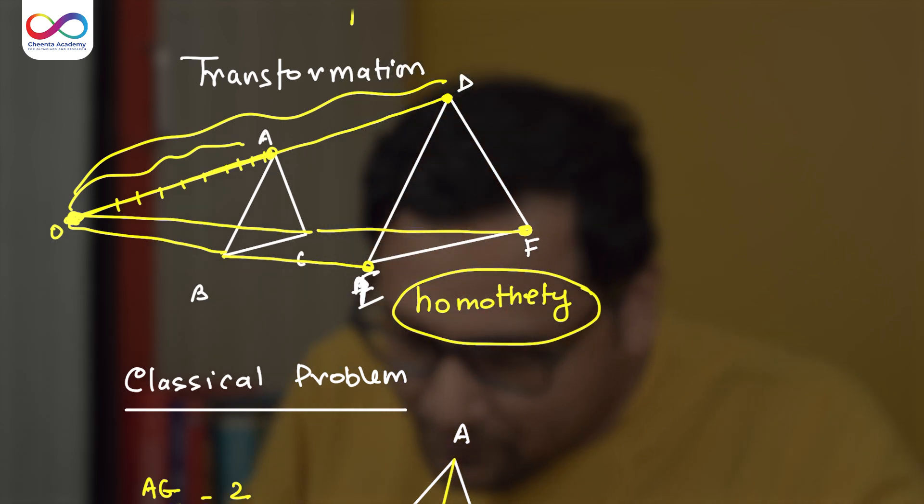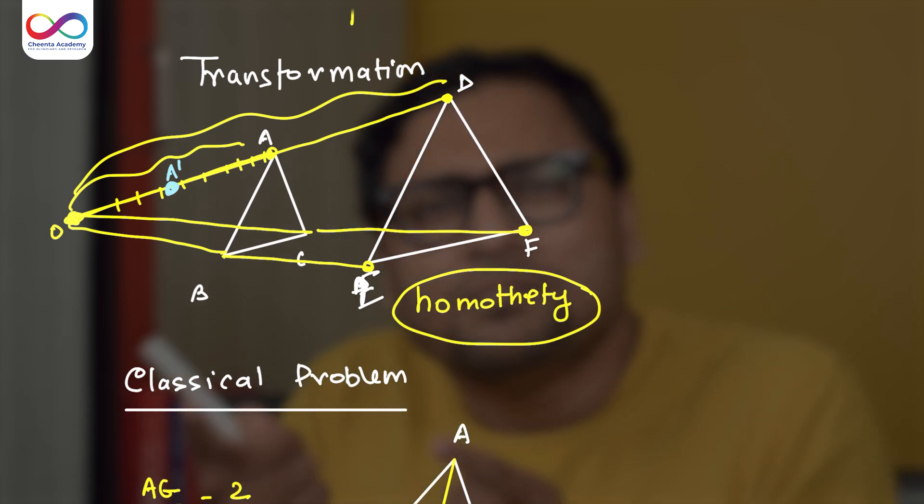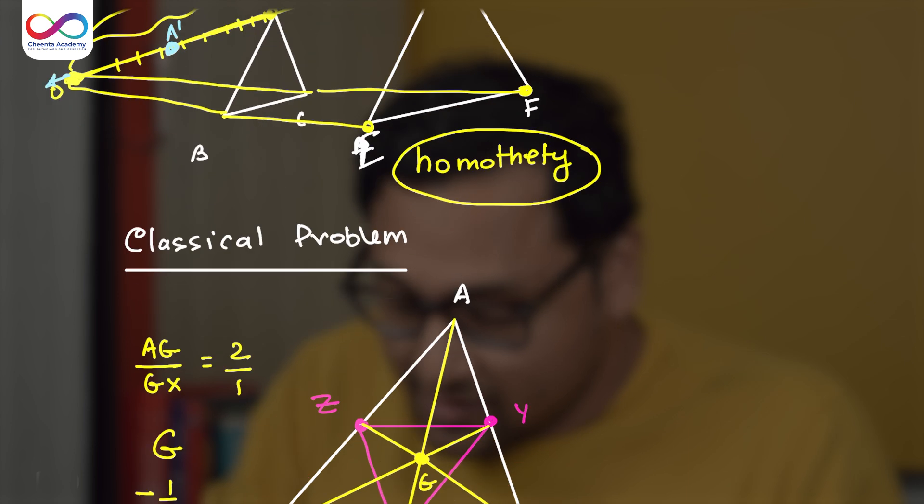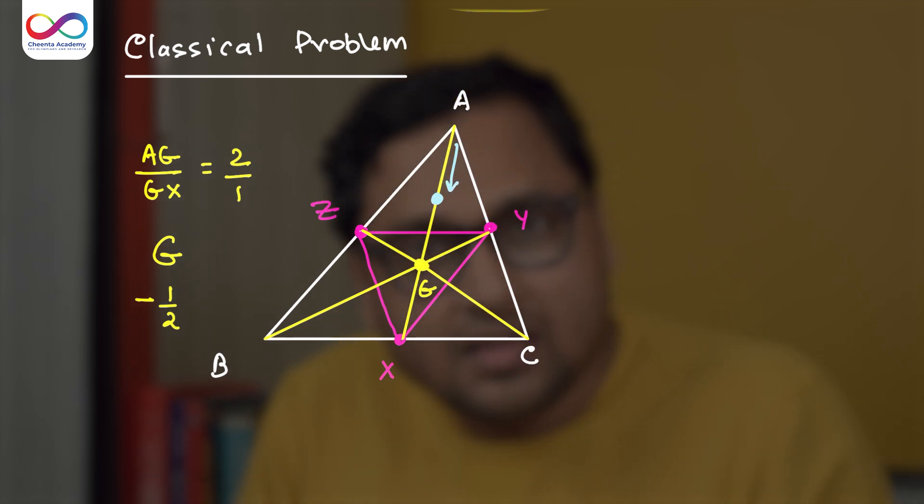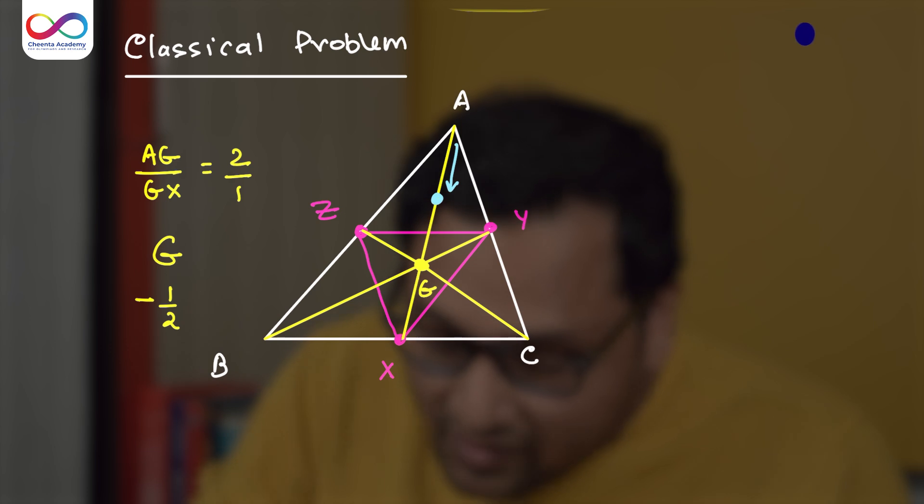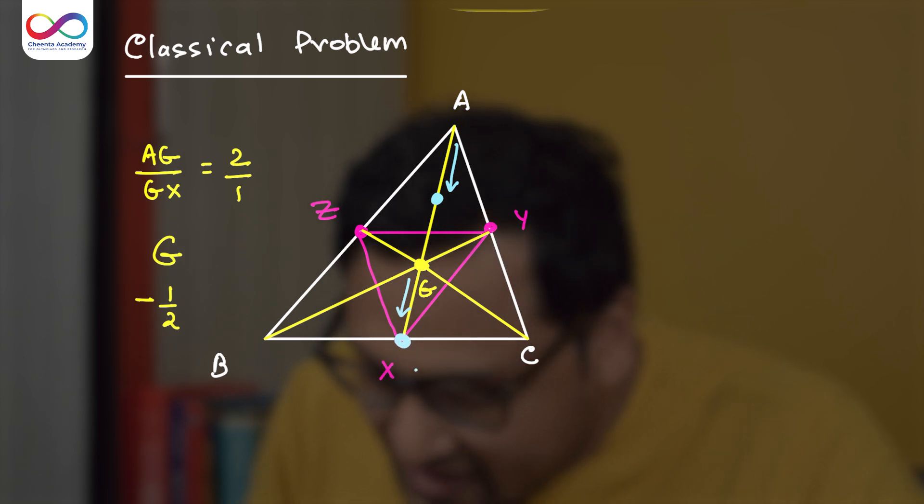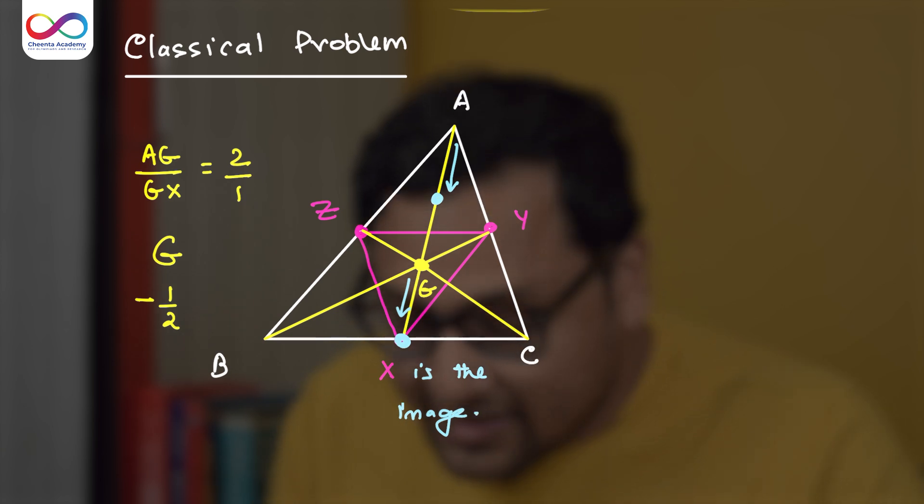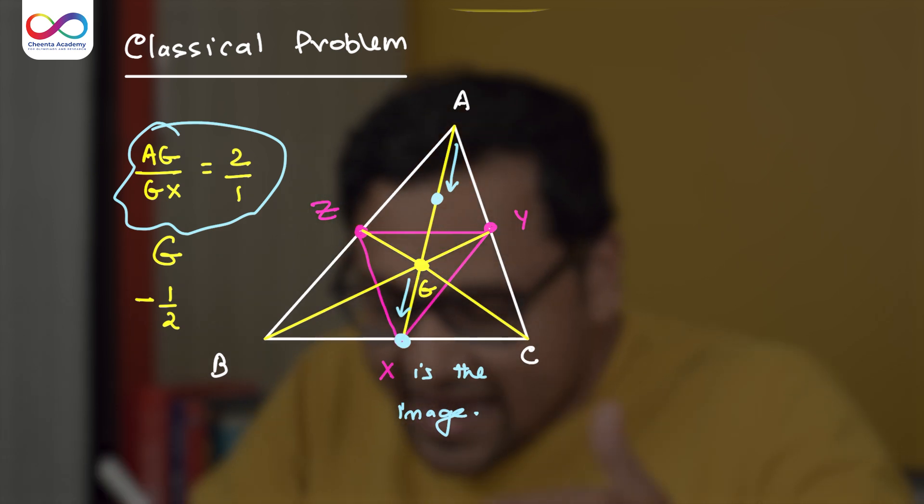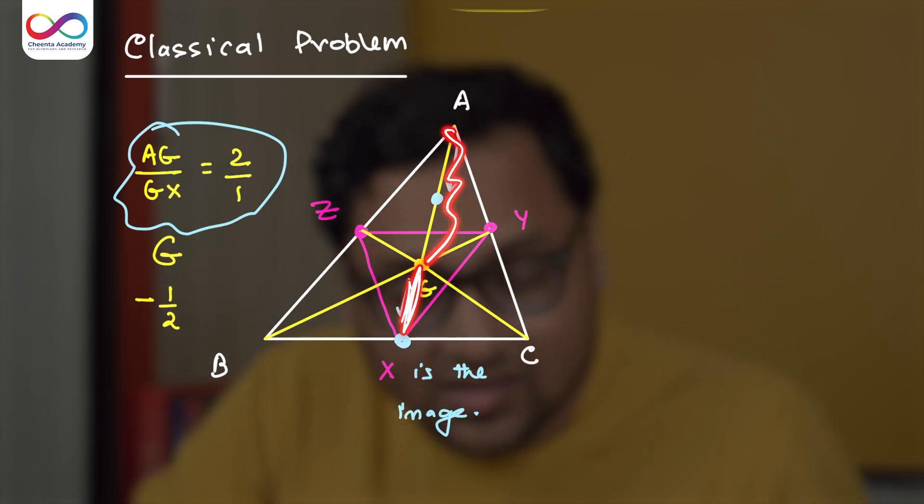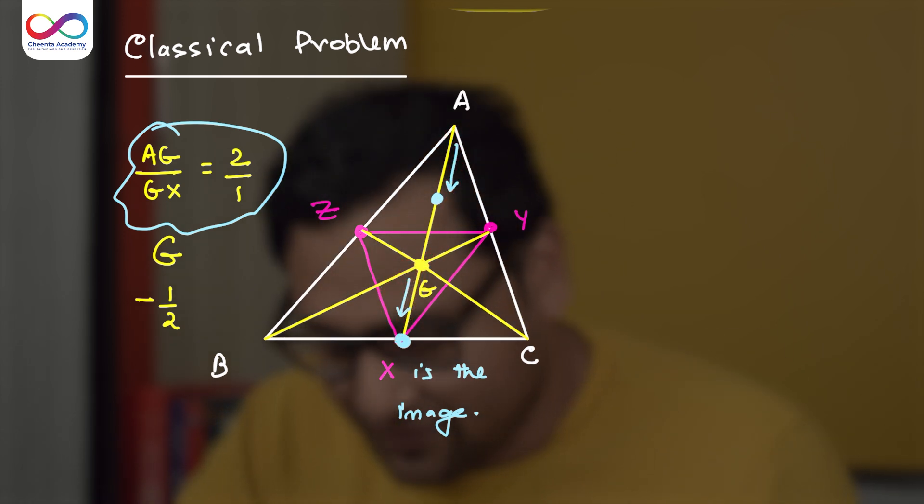What if it was half? Then, I would have gotten this particular point, A prime. So OA squished. But what is minus half? Well, you just go in the other direction. So here, it's minus. If it was half, it would have been here. But since it's minus half, it's in the other direction, other side on G. So the point X is the image. And clearly so because we already know AG by GX is 2 is to 1. So GX, this particular length, is half of AG. So the length matches up and it's on the other side. So it's minus half. Ratio is minus half.